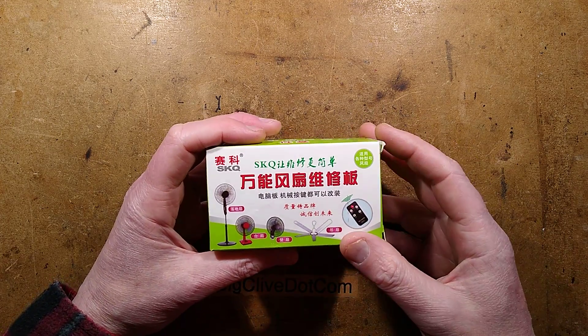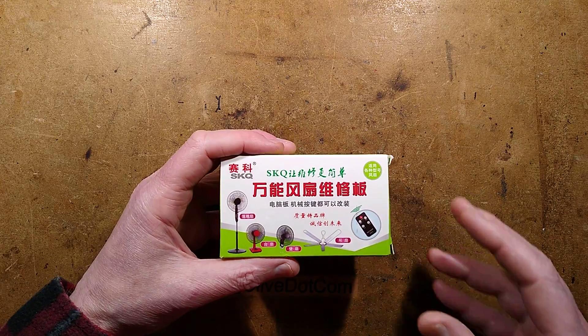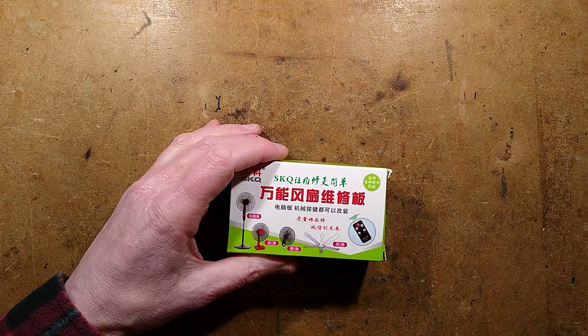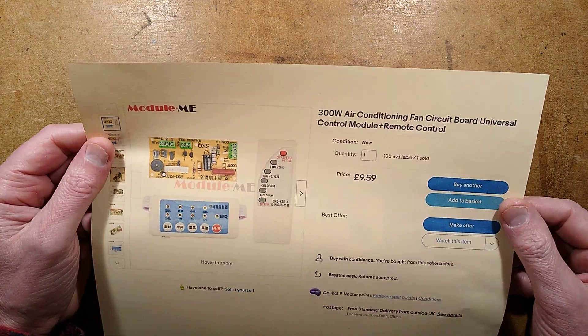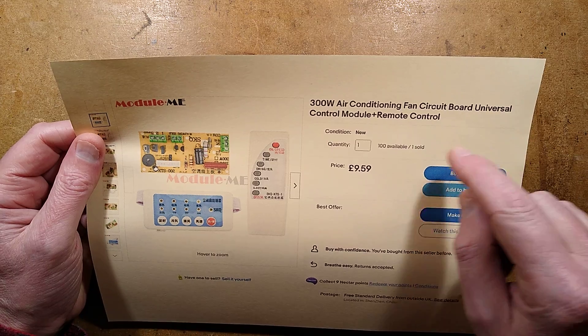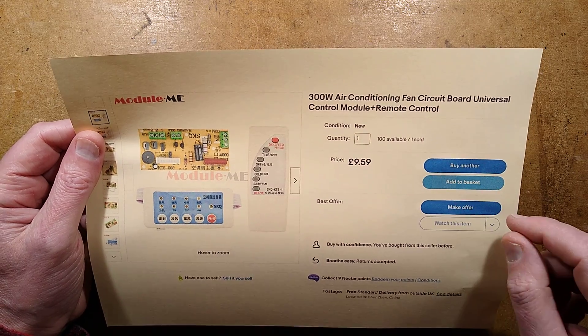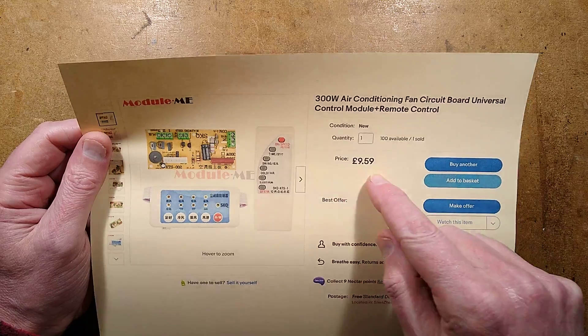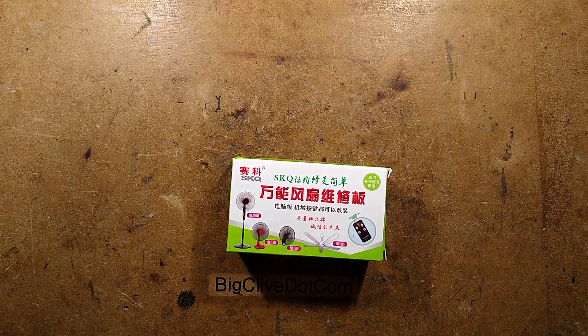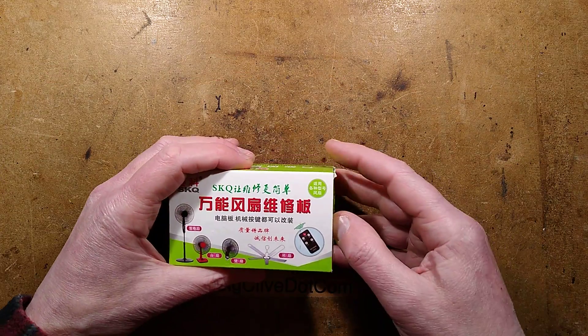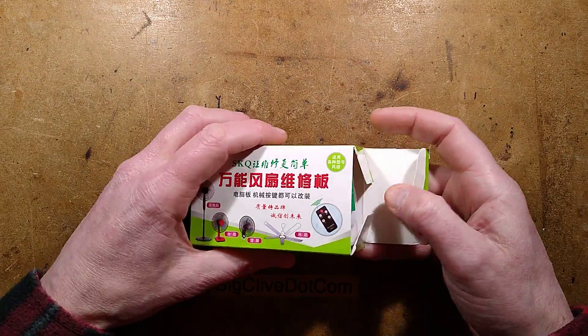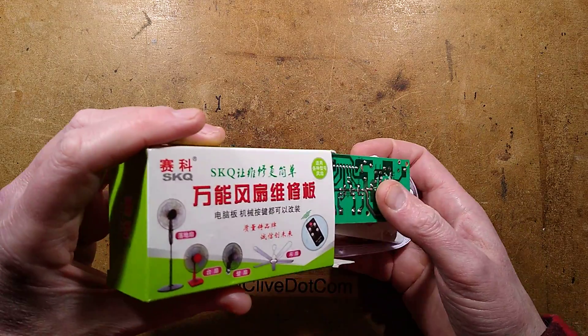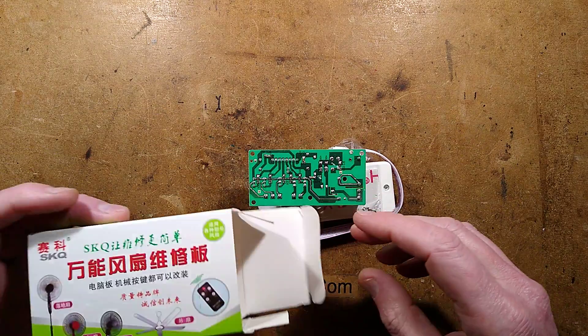It's a remote control fan control module from China, described as a 300 watt air conditioning fan circuit board universal control module with remote control. It comes as the main circuit board, costs £9.59 shipped from China, and could be useful for repairing small air conditioners - not ones with compressors, just the standard ones that use water as a cooling agent.